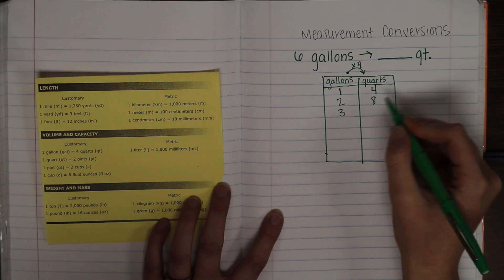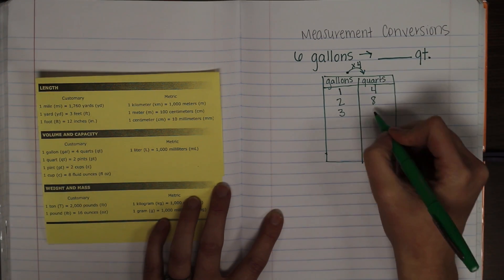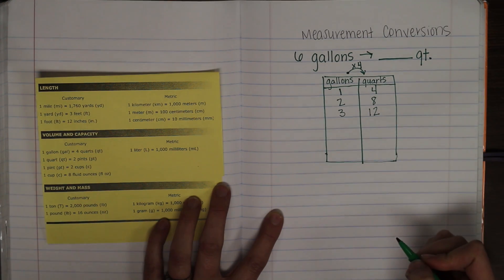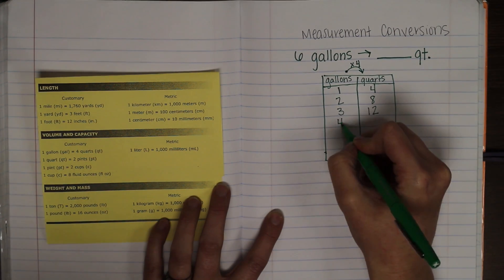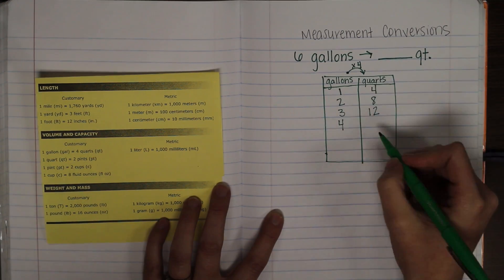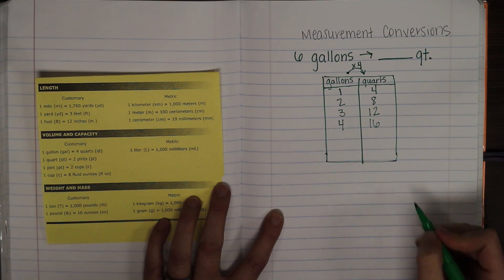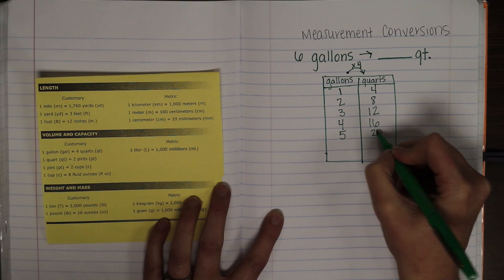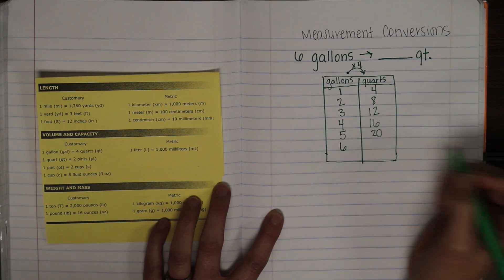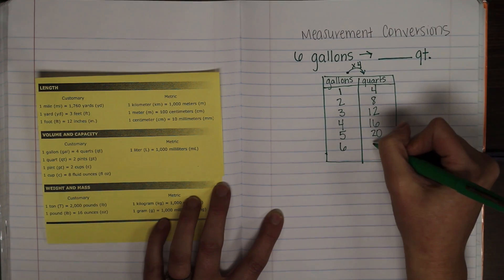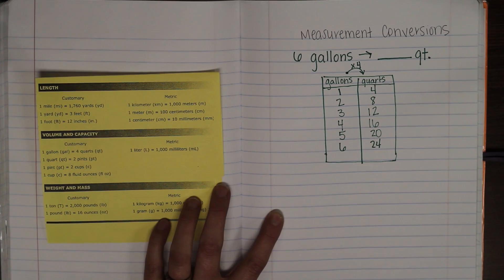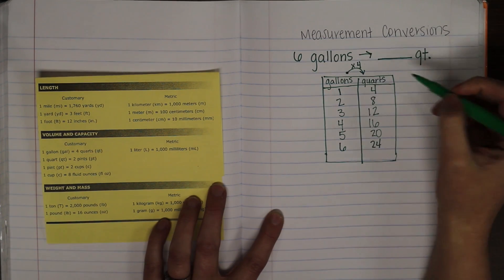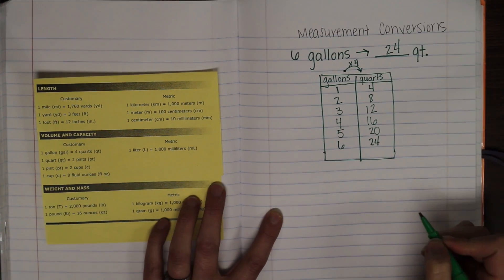two times four would be eight quarts. Three gallons would be three times four, twelve quarts. Four gallons, four times four is sixteen quarts. Five gallons is twenty quarts. And six gallons would be six times four, which is twenty-four quarts. So, our answer to this problem would be twenty-four quarts.